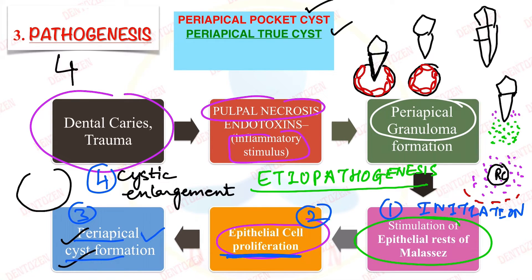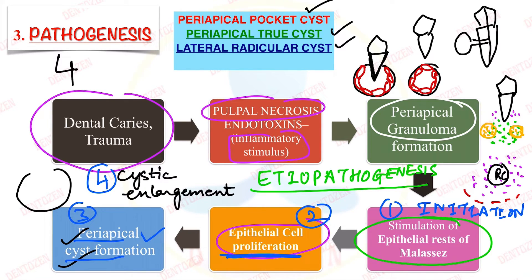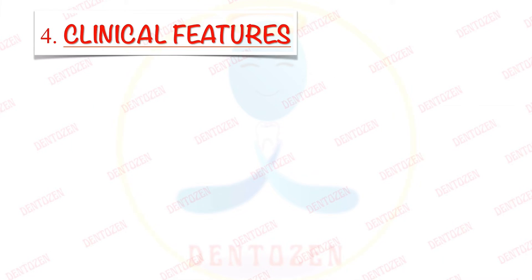Sometimes a cyst can form on the lateral side of the root of the tooth, and this is known as a lateral radicular cyst. Sometimes we see a periapical granuloma in which cell rests of Malassez proliferate to form islands of squamous epithelial cells lying in the periapical granuloma without cyst formation — this granuloma is referred to as 'basest' by endodontists.